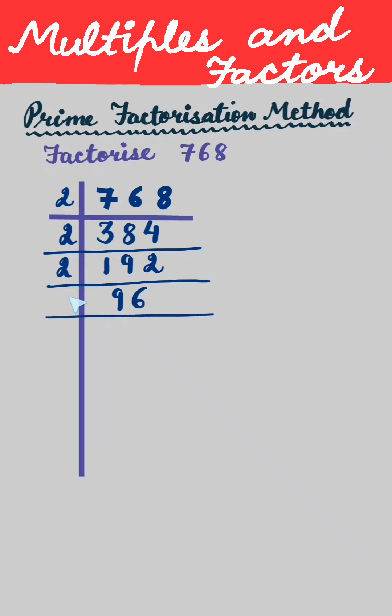Again it goes into 2. 2 times 4 is 8, 1 carry forward and it becomes 16. 2 times 8 is 16.